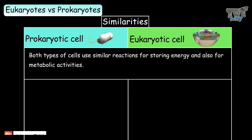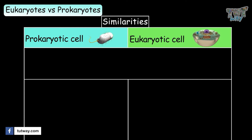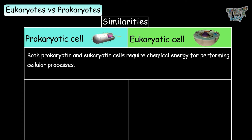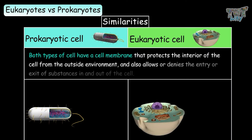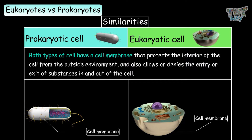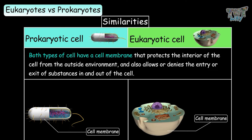Both types of cells use similar reactions for storing energy and also for metabolic activities. Both prokaryotic and eukaryotic cells require chemical energy for performing cellular processes. Both types of cells have a cell membrane that protects the interior of the cell from the outside environment and also allows or denies the entry or exit of substances in and out of the cell.